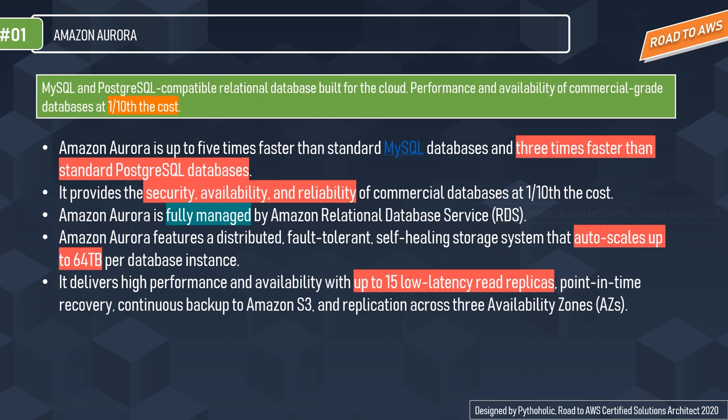Amazon Aurora is fully managed by Amazon RDS — the relational database service — which automates time-consuming administration tasks like hardware provisioning, database setup and installation, patching, and backup. The major advantage is that Amazon Aurora features a distributed, fault-tolerant, self-healing storage system that auto-scales up to 64 terabytes per database instance.